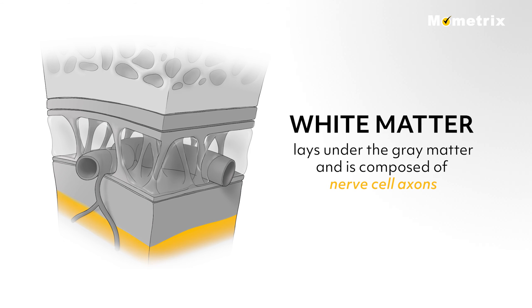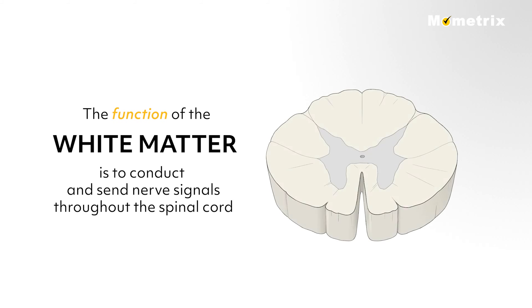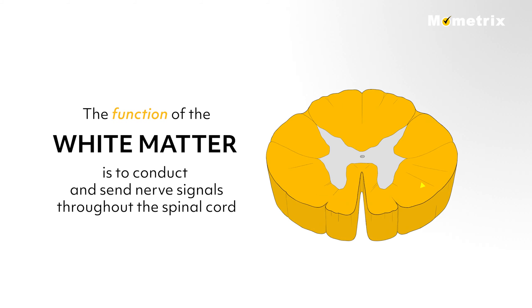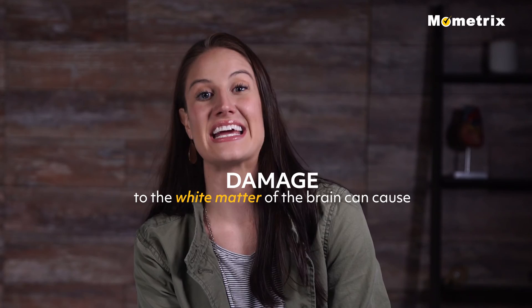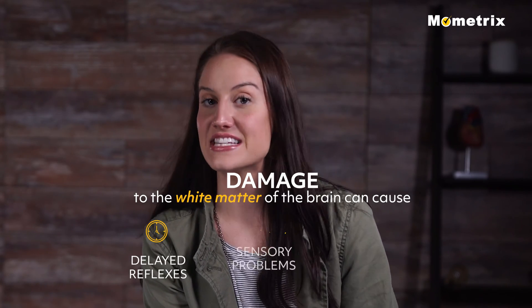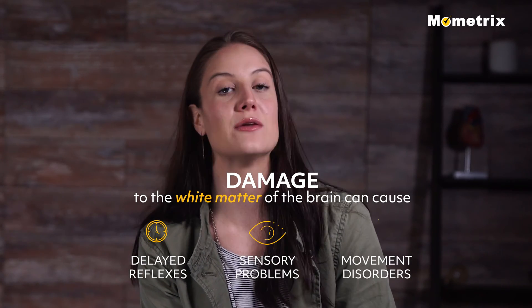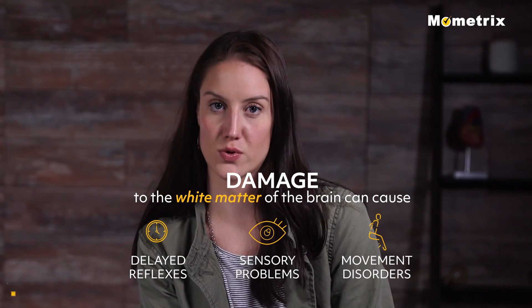The white matter of the brain lays under the gray matter and is composed of nerve cell axons. The function of the white matter is to conduct and send nerve signals throughout the spinal cord. Damage to the white matter of the brain can cause delayed reflexes, sensory problems, and movement disorders.